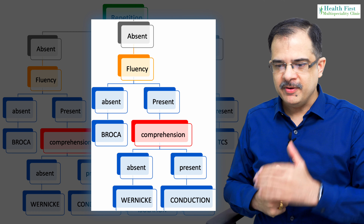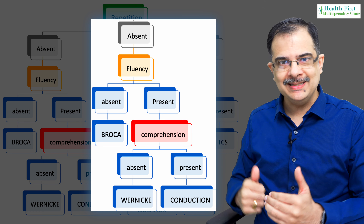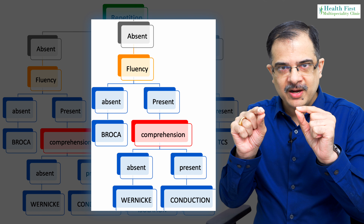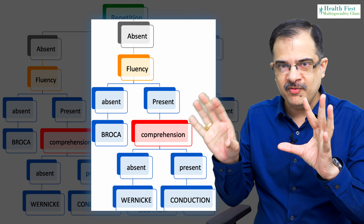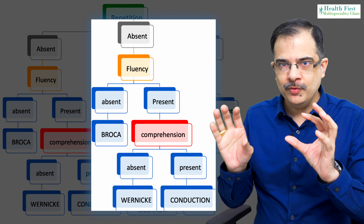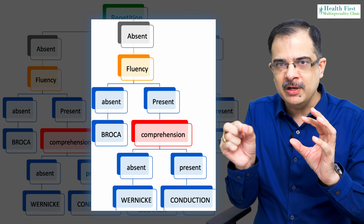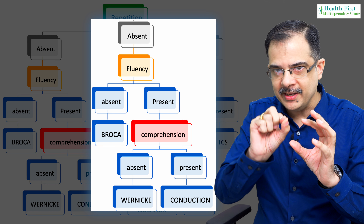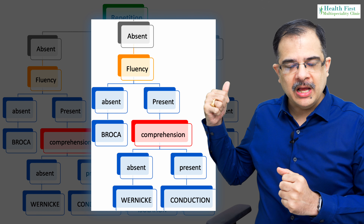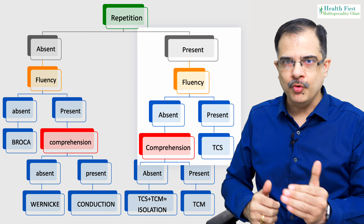If fluency is positive, then assess comprehension. If comprehension is also positive, that means it is conduction aphasia. If only the conduction fibers are affected and Broca's and Wernicke's are normal, then fluency will be intact, comprehension will be intact, and only repetition will be affected — that is conduction aphasia. While if comprehension is absent, it is Wernicke's aphasia.